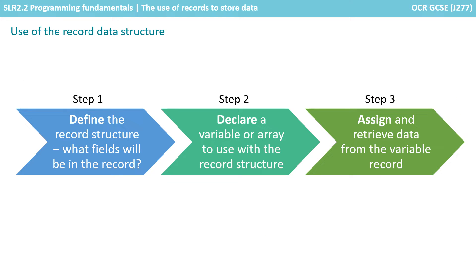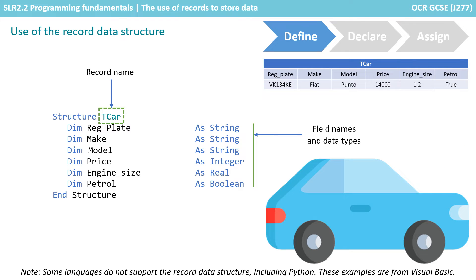There are three steps to be able to use the record data structure if your language supports it. You define the record structure — in other words, you tell the program what fields are going to be in it. You declare a variable or an array to use the record structure. And then finally, you can assign and retrieve data from the variables inside the record. Let's look at each stage.